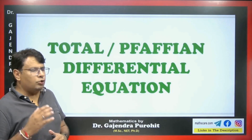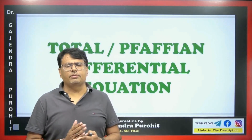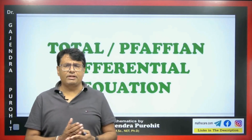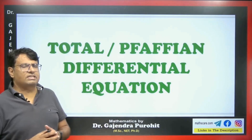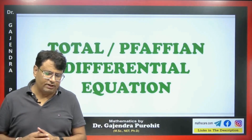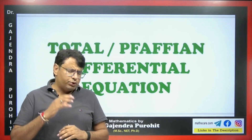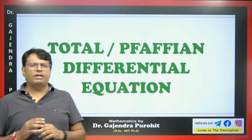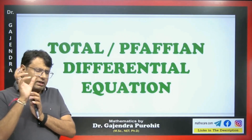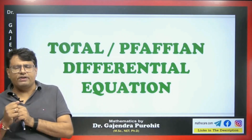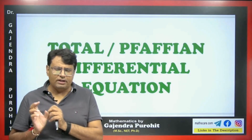I am currently teaching about total differential equations and I have explained the inspection method, then the auxiliary equation method, then the homogeneous method. Today I will be explaining to you the general method, also known as the 'taking z as a constant' method. Whenever an exponential term or a trigonometric term appears in the total differential equation, then this method is used.